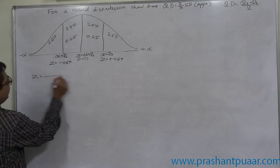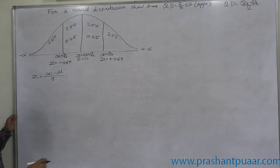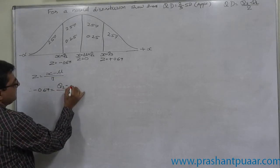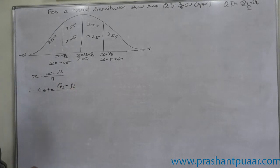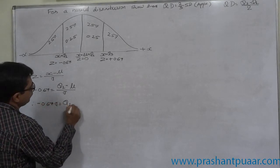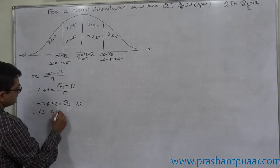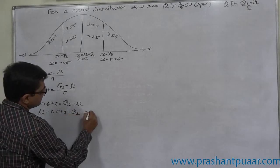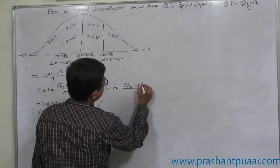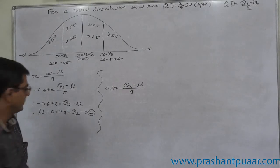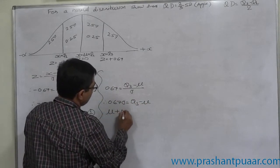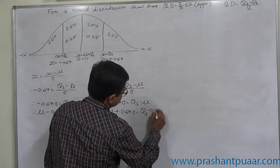We know that z-score equals x minus mean divided by standard deviation. So minus 0.67 equals Q1 minus mu divided by sigma, giving us mu minus 0.67 sigma equals Q1 — call this equation 1. Similarly, positive 0.67 equals Q3 minus mu divided by sigma, giving mu plus 0.67 sigma equals Q3 — call this equation 2.